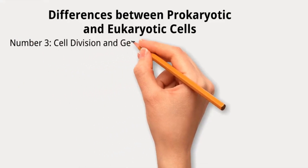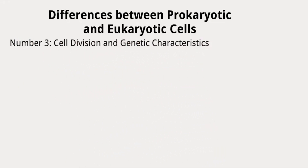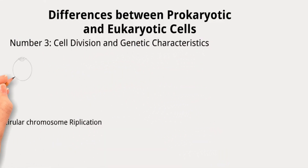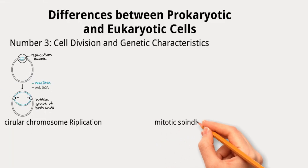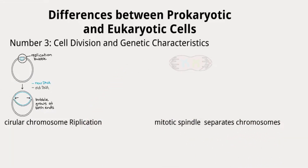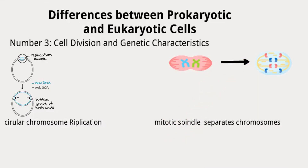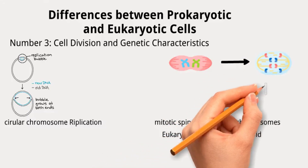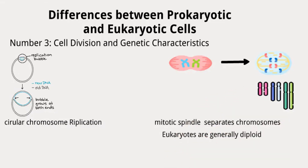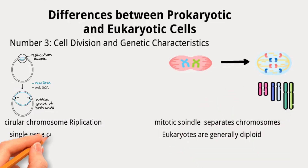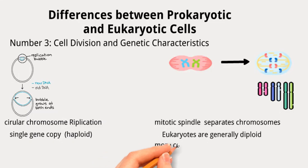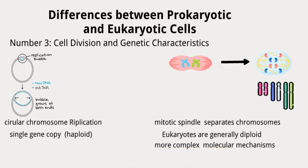Number three: cell division and genetic characteristics. Unlike the circular chromosome in prokaryotes, eukaryotic cells divide using a microtubule-containing mitotic spindle that separates chromosomes during mitosis. Eukaryotes are generally diploid, with two copies of genes per cell, one from each parent, while only a single copy exists in prokaryotes. Eukaryotes use more complex mechanisms in replication, translation, and other molecular functions, meaning more enzymes are required compared to prokaryotes.